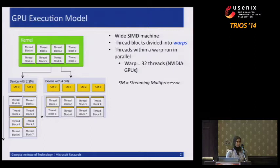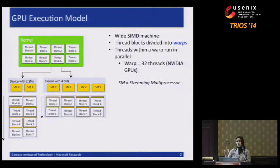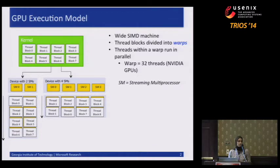The GPU can be thought of as a wide SIMD machine. Computational functions that run on the GPU, which are called kernels, are launched with hundreds and thousands of threads. These threads are grouped into thread blocks, which can execute independently and are scheduled on the SMs available on a GPU device. If a GPU device has more SMs, you can run more thread blocks in parallel and get better performance.